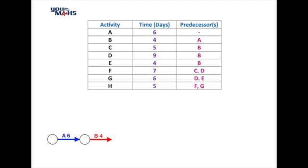We can then see that we've got three activities which have B as a predecessor. So three activities will come off the node at the completion of B and that's C, D and E.